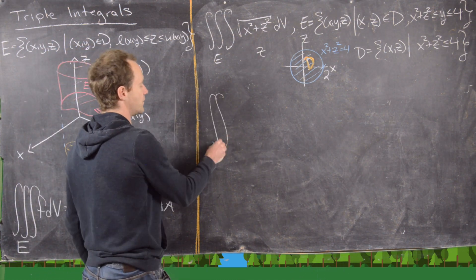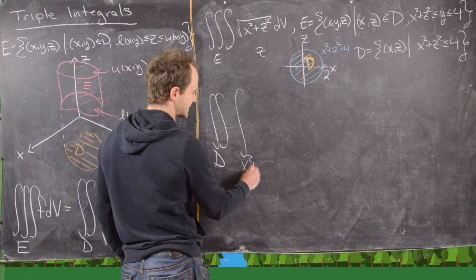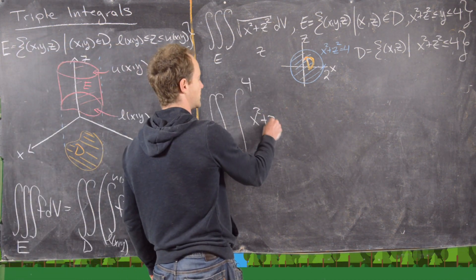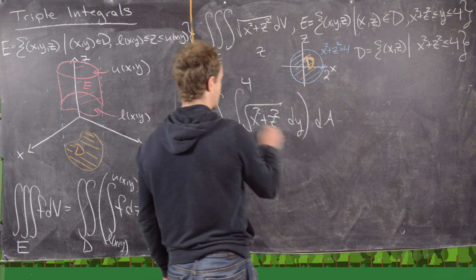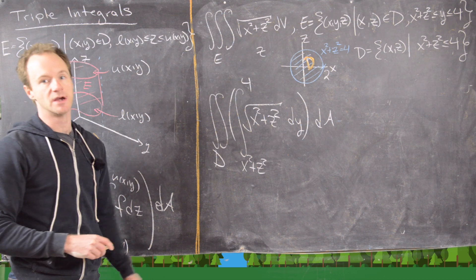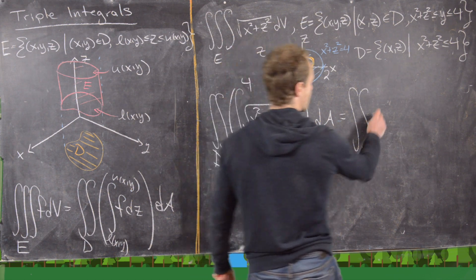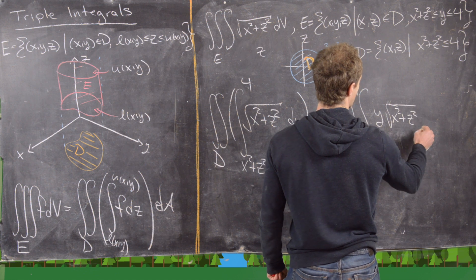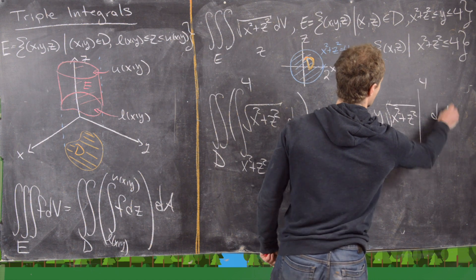We can write the triple integral as the double integral over disk D of the single integral from x² + z² up to 4 of √(x² + z²) dY dA. Since there are no Y's in the integrand, the antiderivative is easy — we get the double integral over D of Y · √(x² + z²) evaluated from Y = x² + z² to Y = 4, times dA.